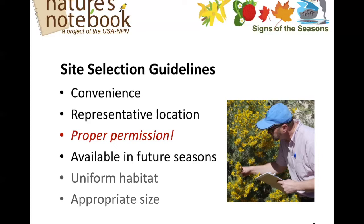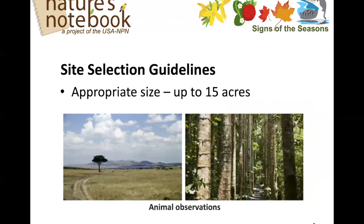For uniform habitat: if you choose to observe in two adjacent but distinct habitats, please document them as separate sites. For example, a wetland adjacent to or surrounded by a drier grassland or forest should be documented as a separate site. In other words, habitat type is really important to include if you can.